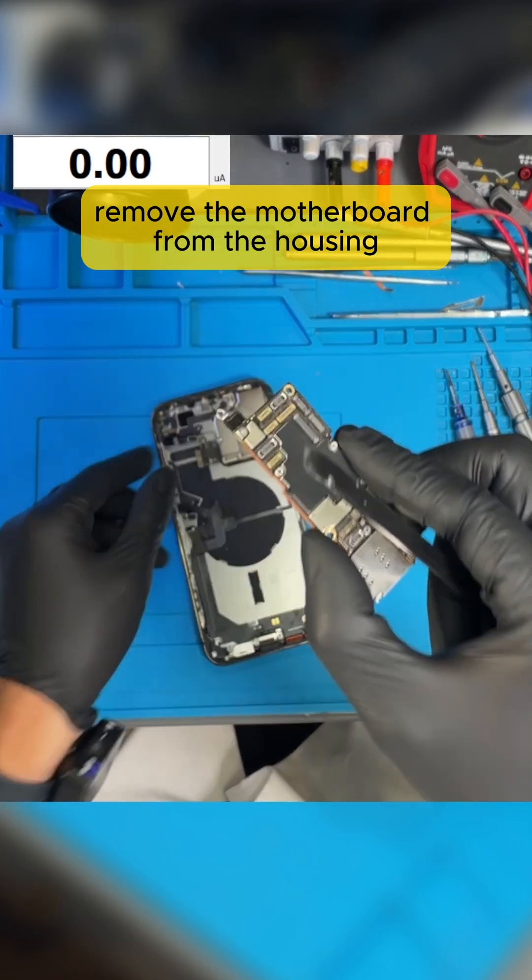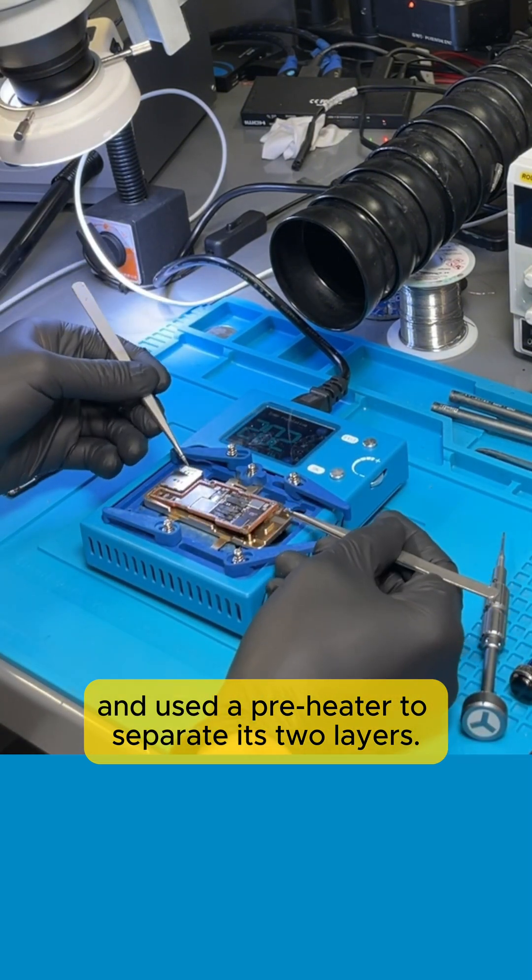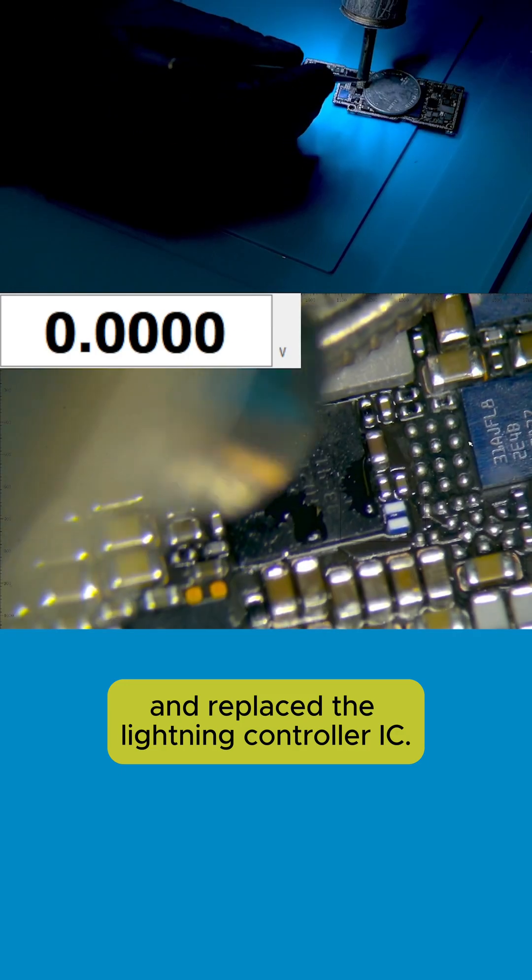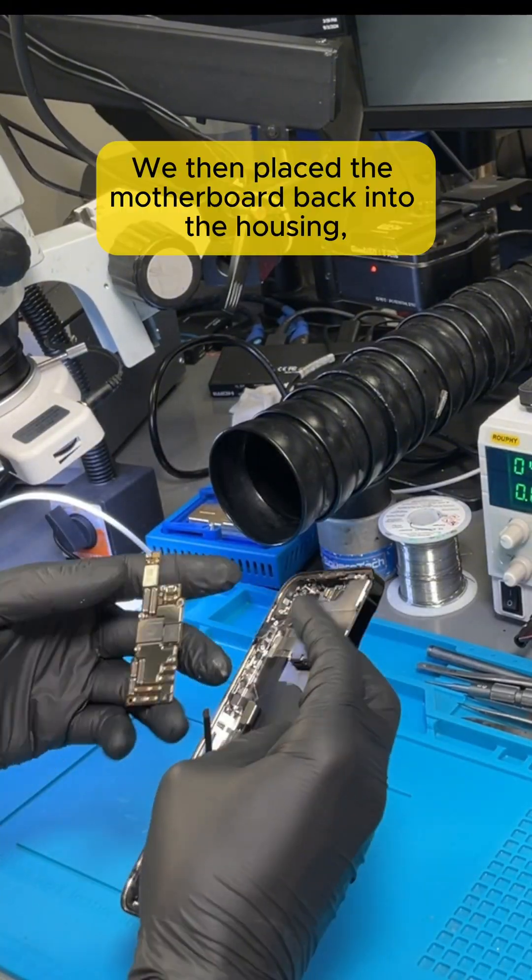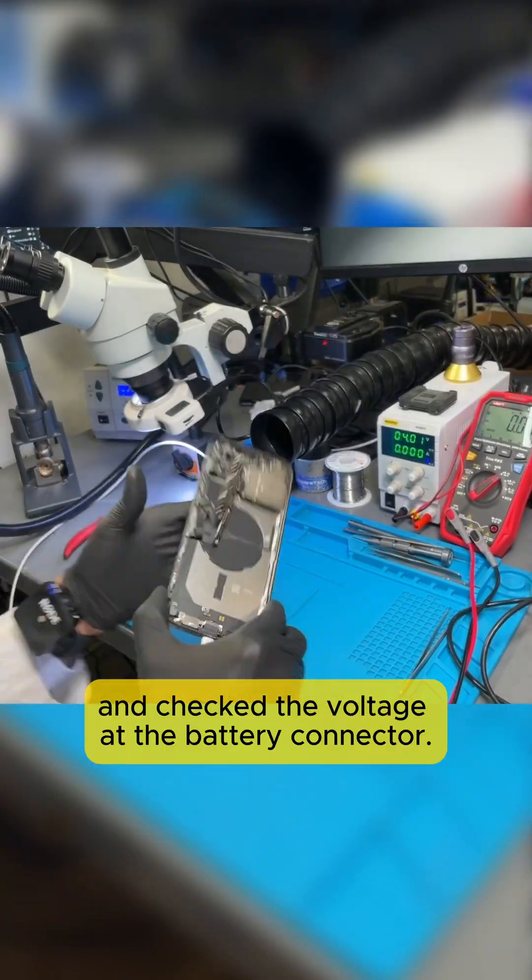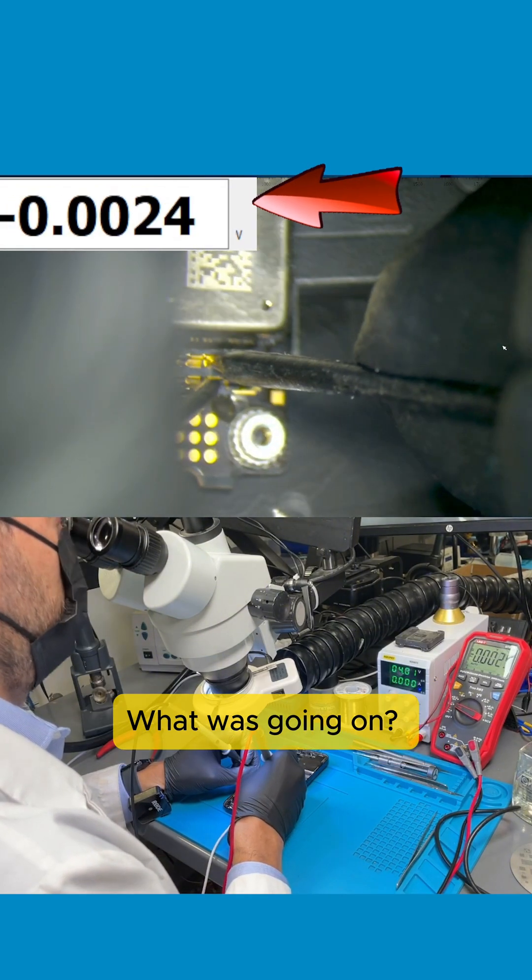We then proceeded to remove the motherboard from the housing and used a pre-heater to separate its two layers. After that, we removed and replaced the lightning controller IC. We then placed the motherboard back into the housing, connected the charger, and checked the voltage at the battery connector. The voltage was still not present. What was going on?